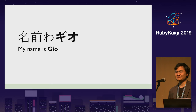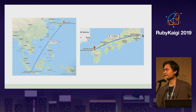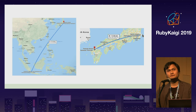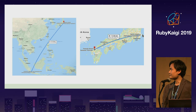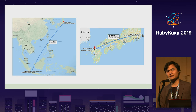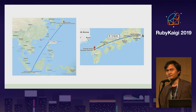My name is Gio. I come from Jakarta — if you don't know, Jakarta is located in Indonesia. A lot of people know Bali more than Jakarta, but actually the capital city of Indonesia is Jakarta. It took about seven hours to go to Tokyo from Jakarta, and then another two hours from Tokyo to Fukuoka.